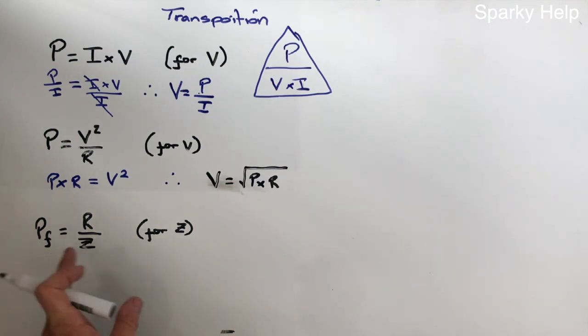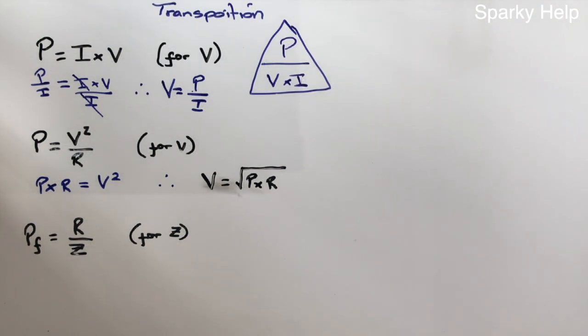This one here is power factor, PF equals R divided by Z. This one does fit in a triangle, it's power factor is equal to R divided by Z, R being resistance, Z being impedance. This one can go in a triangle. And R will go at the top, power factor will go there, and Z will go there. Remember these are divide, so if you want to find power factor, it's R divided by Z, which is what it already has.